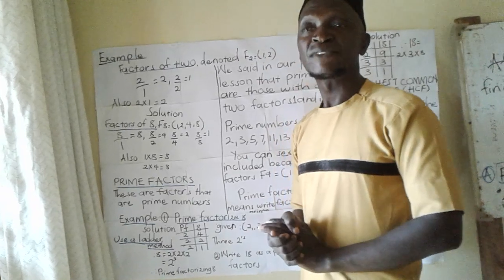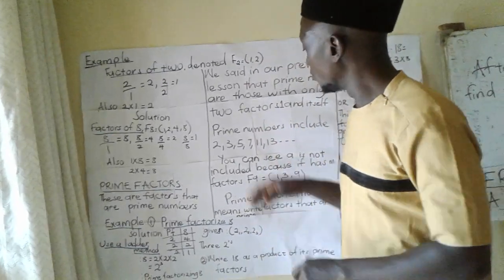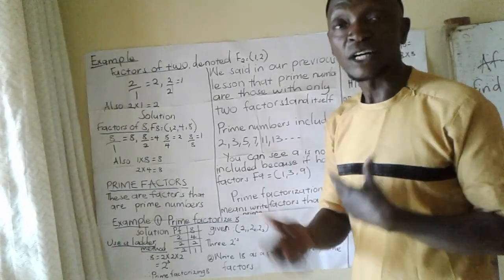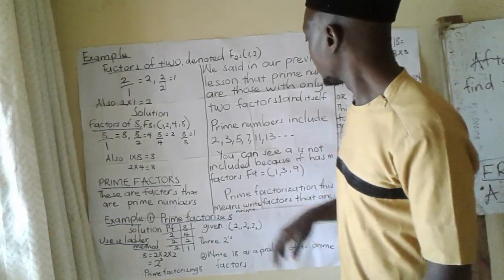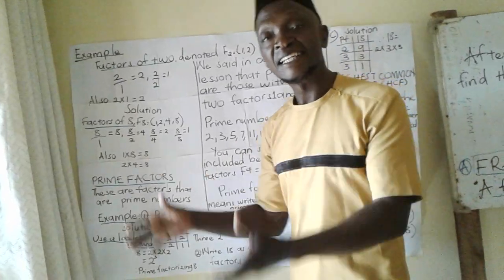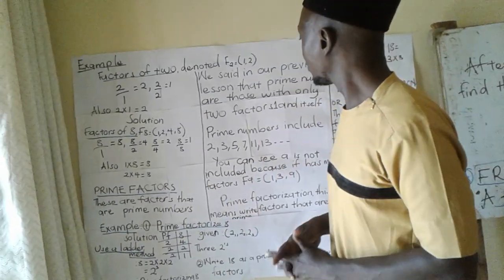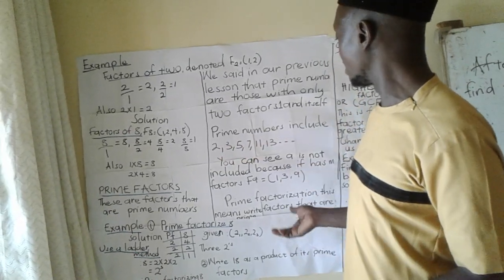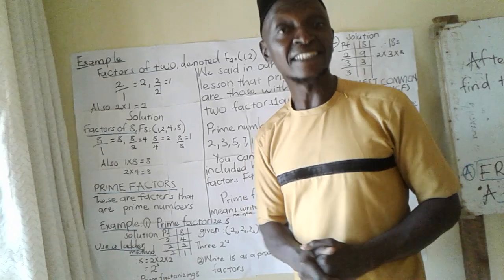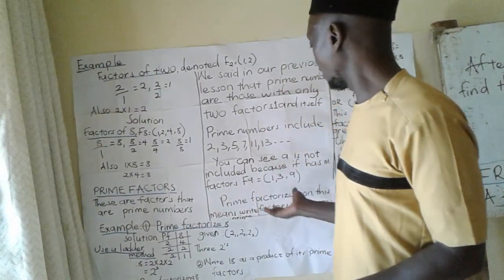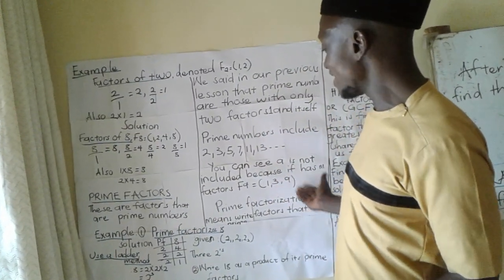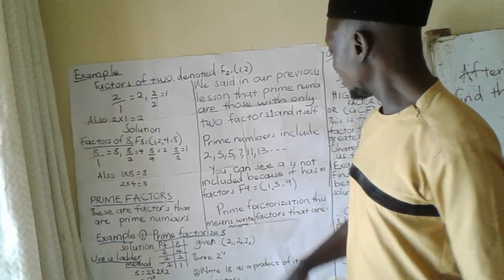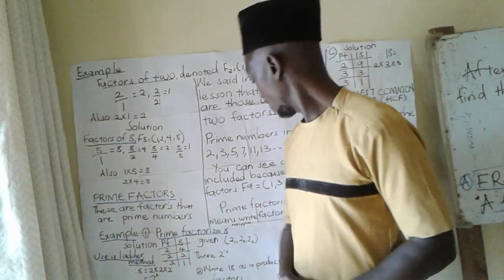I've promised you a free book at the end of the lesson. You can find the questions in the comments as I told you, and you can also put the solutions in those comments. I'll see if your answers are right and then give you a free book. So the prime numbers include 2, 3, 5, 7, 11, 13. I'm not including 9 because 9 has more than 2 factors — it has 1, 3, and 9. Prime factorization means you are writing only factors that are prime.